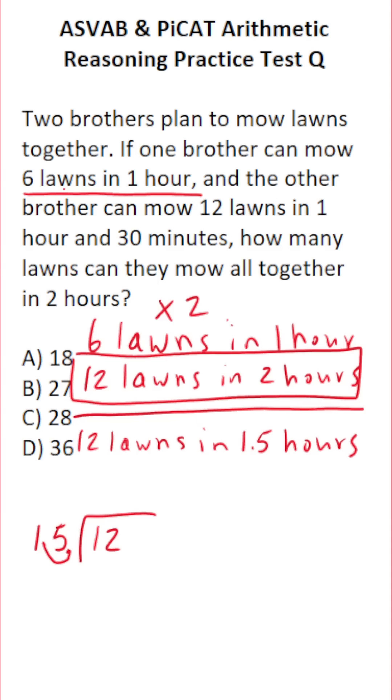We have to move this decimal one time to the right to make this 15. And at the same time, we're going to move this decimal one time to the right to make this 120. 120 divided by 15 is 8. 15 times 8 is exactly 120.